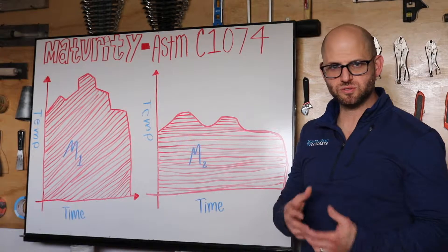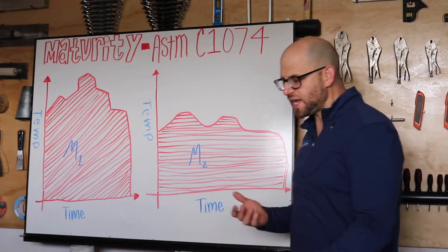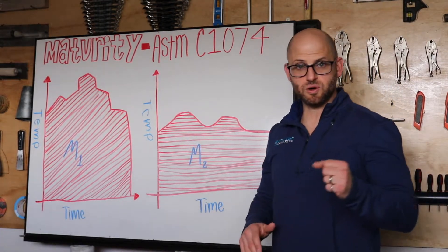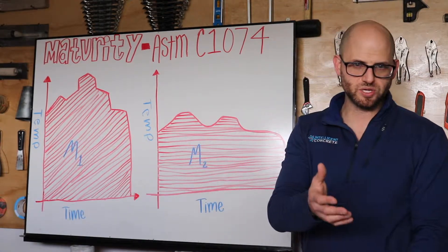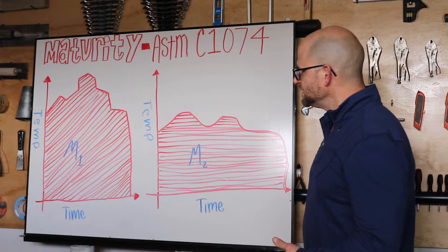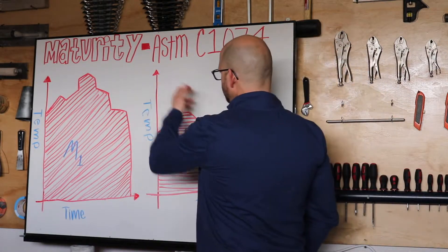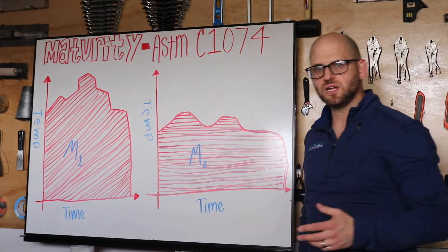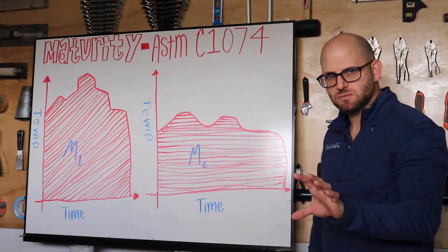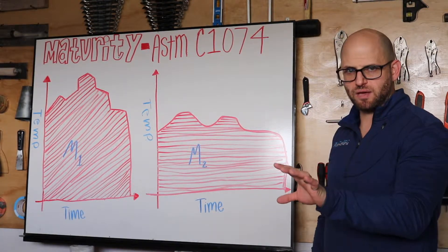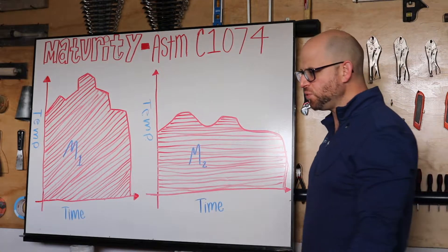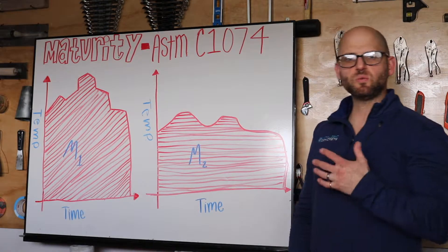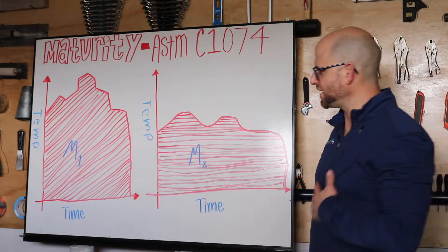If we're looking at ASTM C1074 or the truncated method as proposed by your Department of Transportation or state agency, we're looking at the maturity method for concrete, a way to predict concrete strength. The word maturity is very important and that's what we need to focus on today.